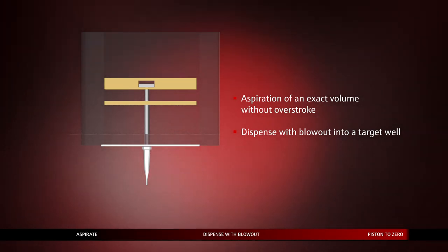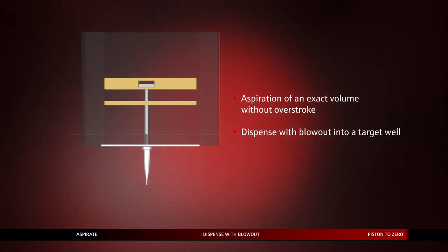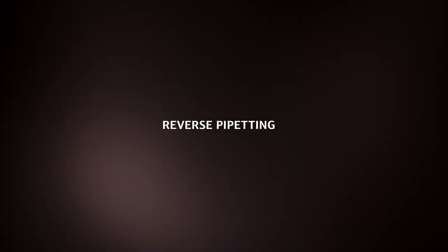To summarize, forward pipetting consists of aspirating an exact volume without overstroke from a source well and dispensing with blowout into a target well.